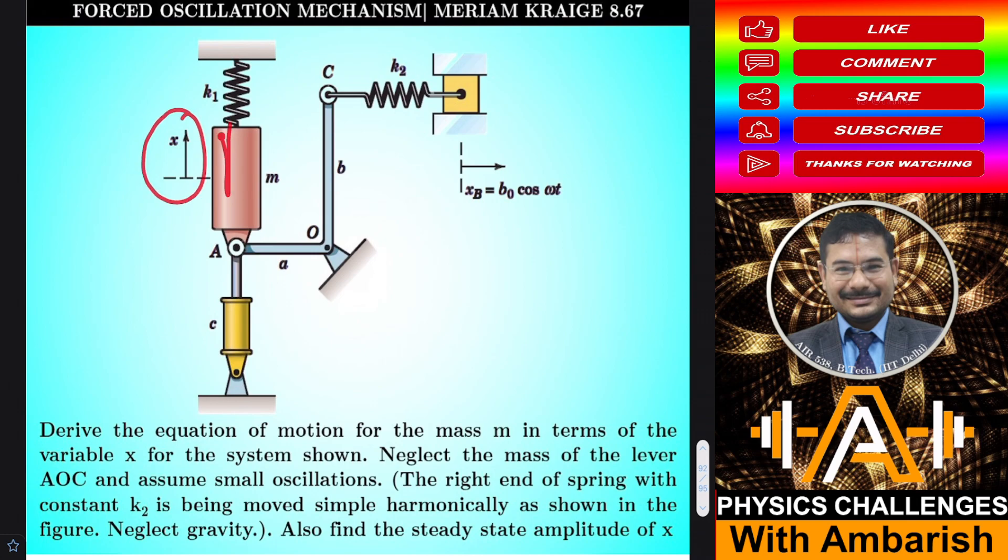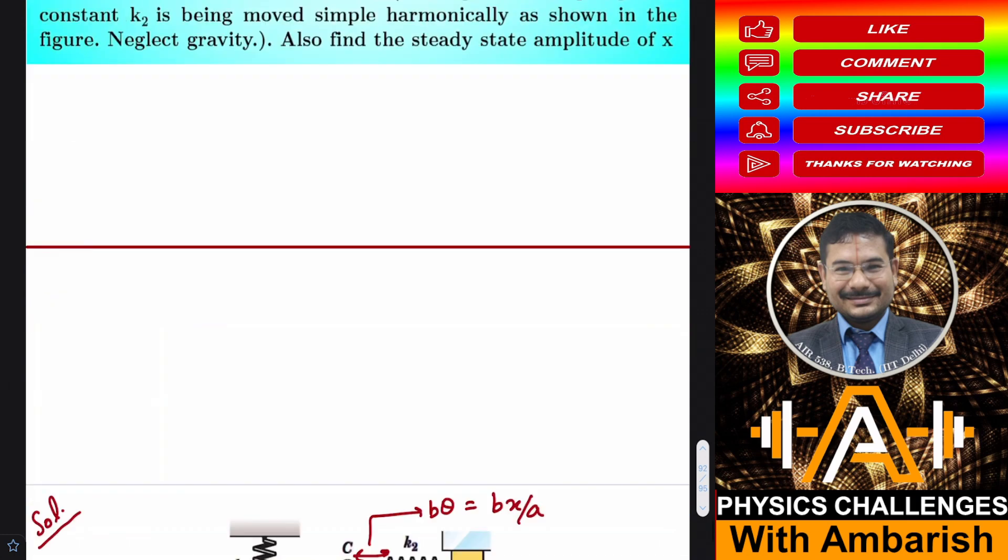Let me read the question completely. Neglect the mass of the lever AOC and assume small oscillations. The right end of the spring with constant K2 is being moved simple harmonically as shown in the figure. Neglect gravity, also find the steady state amplitude of X. This variable X is varying sinusoidally with time and I want to find out the amplitude of the variable X. If you want, you can give it a try. I'll get into my analysis right away.